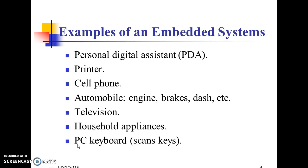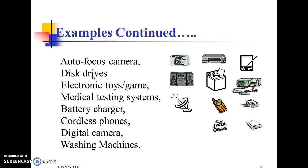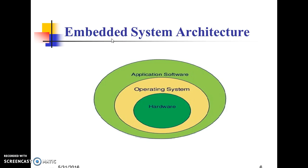Further examples include: Household Appliances, PC Keyboard, Autofocus Camera, Disc Drives, Electronic Toys and Games, Medical Testing Systems, Battery Charger, Cordless Phones, Digital Camera, and Washing Machines. Embedded System Architecture: an embedded system consists of Hardware, Operating System, and Application Software.